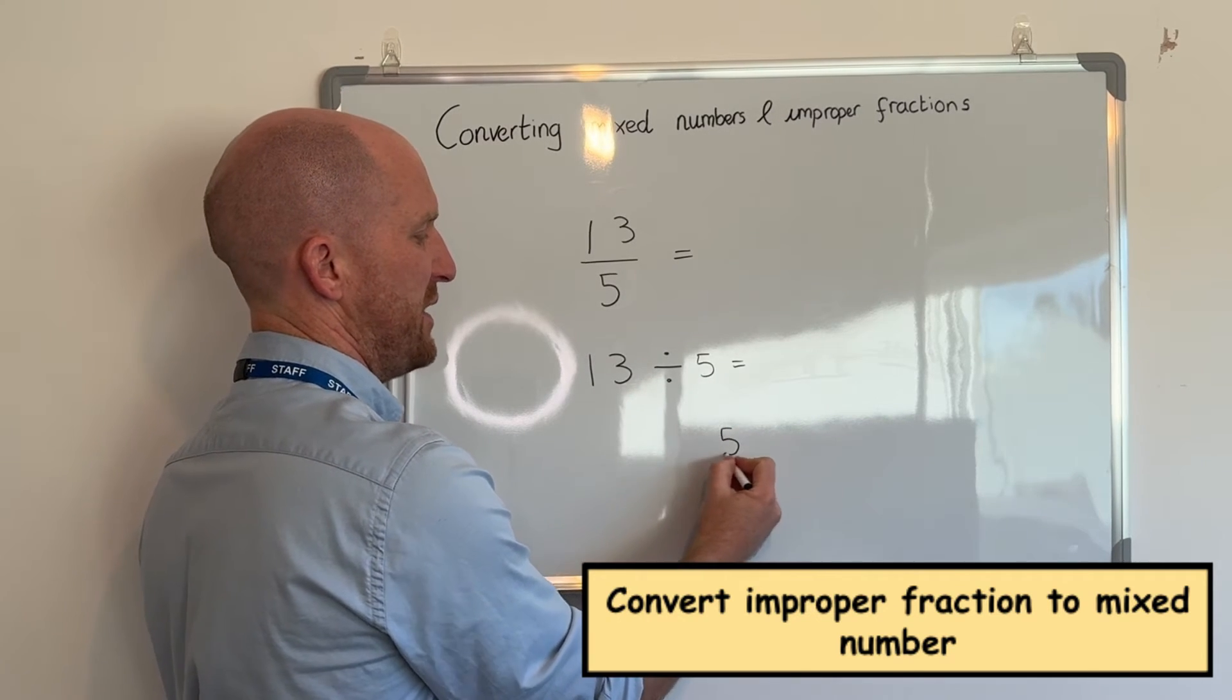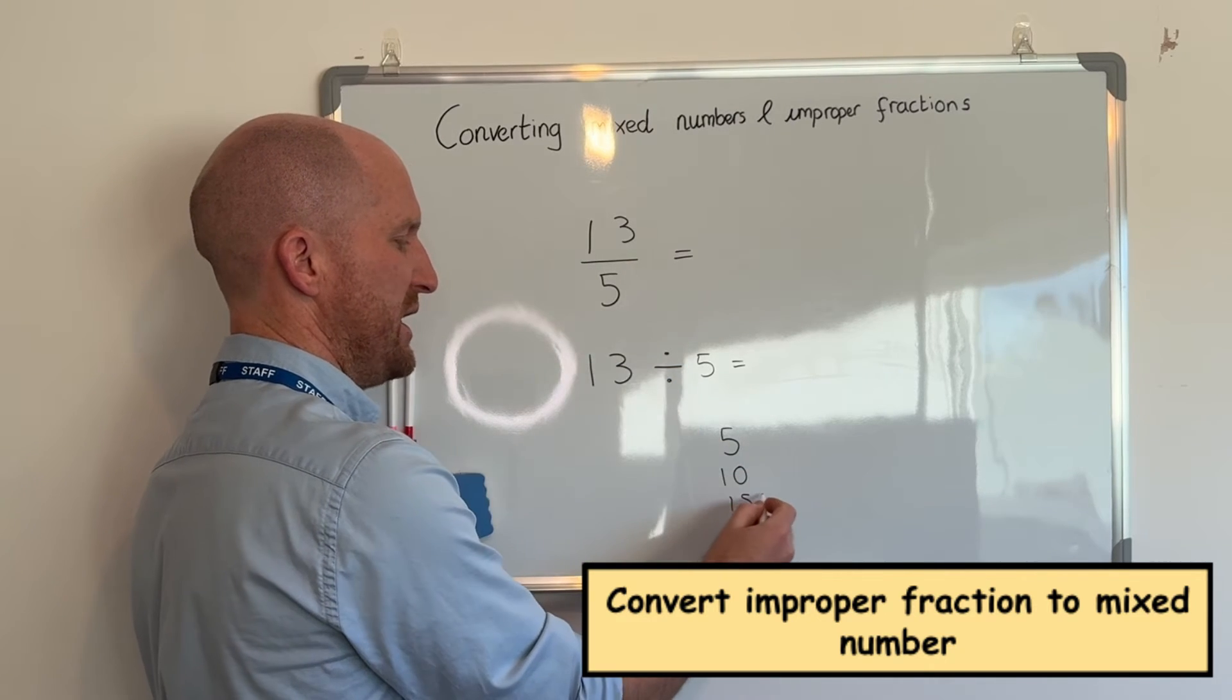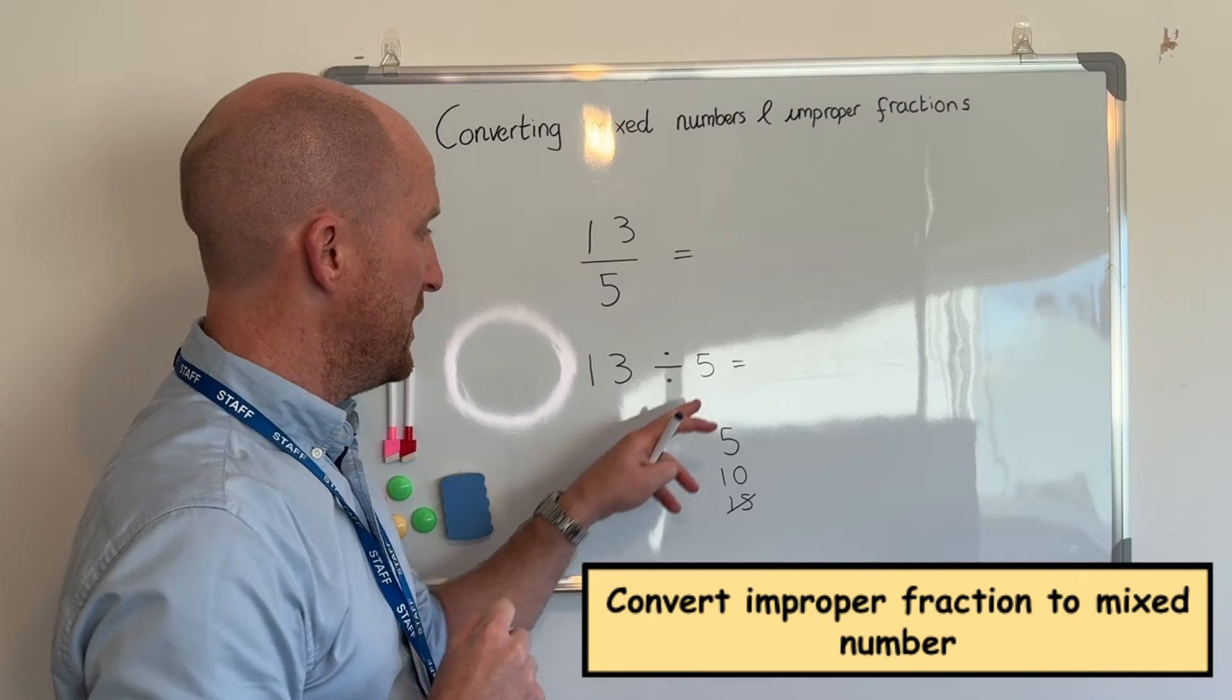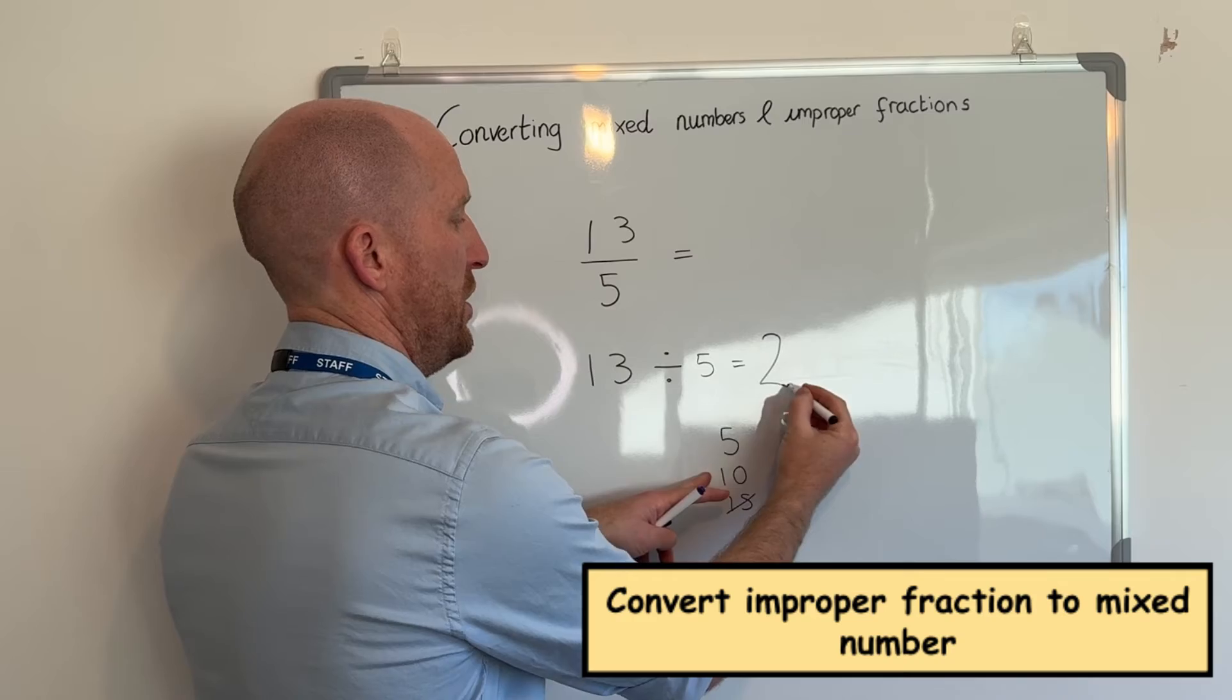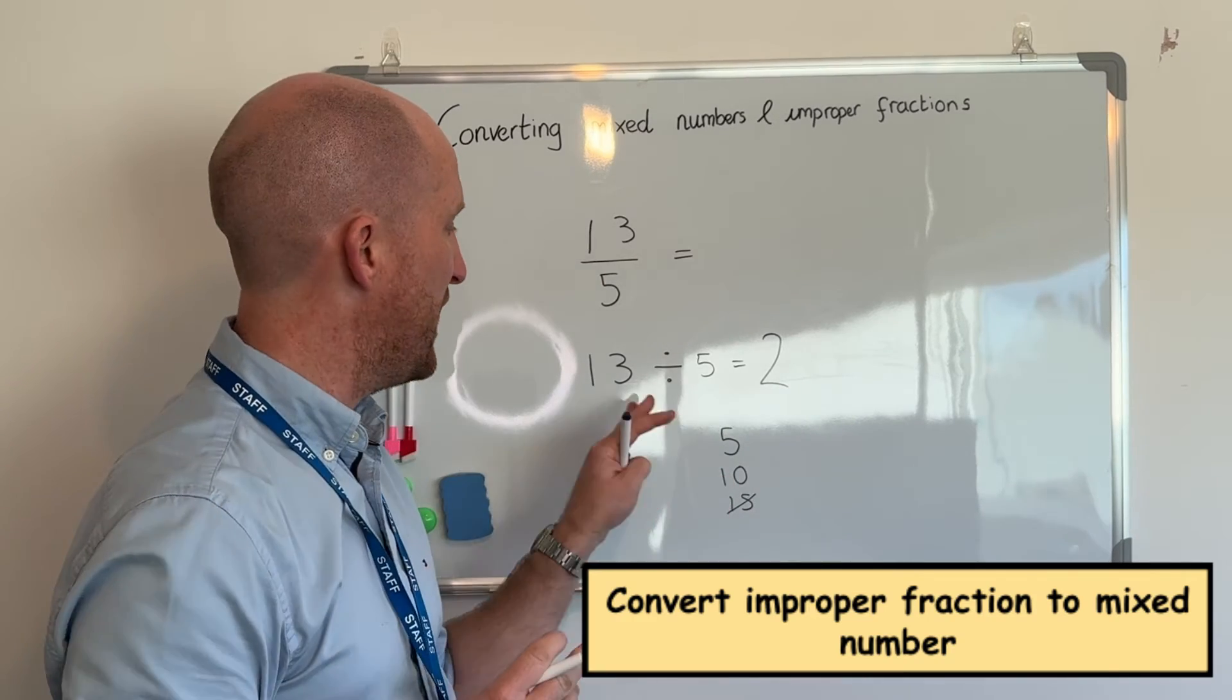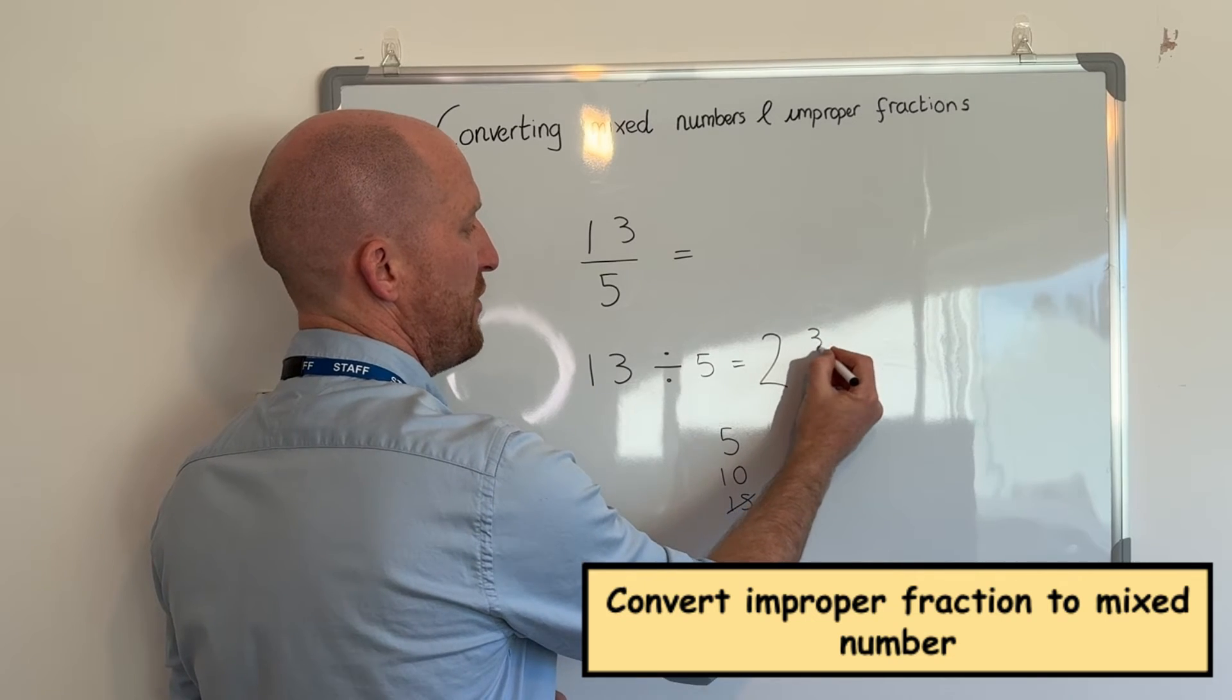Now all you have to say is how many fives are in thirteen. So if I do my five times table, five, ten, fifteen, I've only got thirteen so fifteen is too many. So there are two, two full fives out of thirteen and there is three remainders.